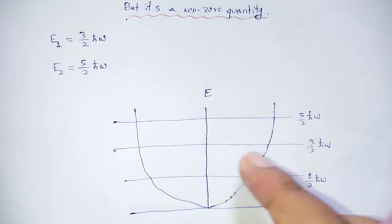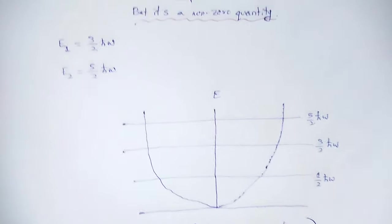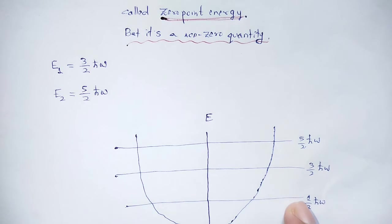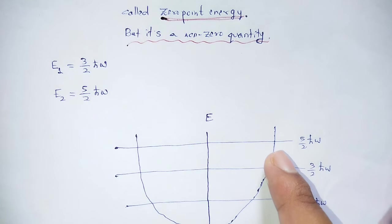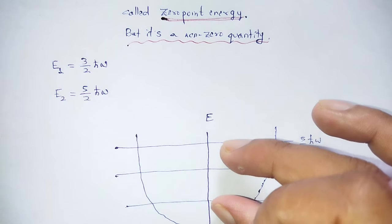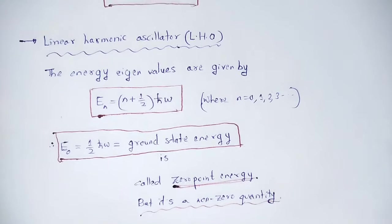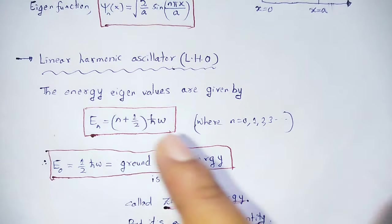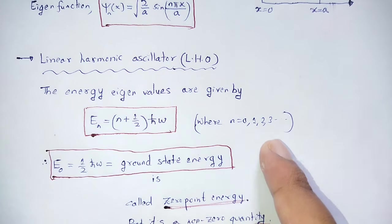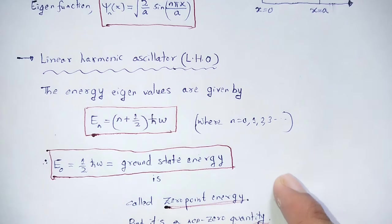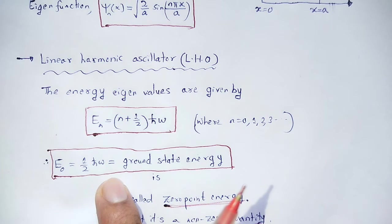The energy eigenvalues are: E0 equals half ħω, E1 equals 3/2 ħω, E2 equals 5/2 ħω. For the quantum harmonic oscillator, the energy eigenvalue En equals (n + 1/2)ħω. The ground state energy is half ħω, which is a non-zero quantity.